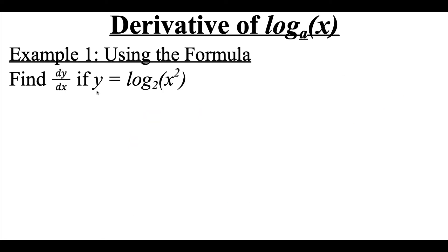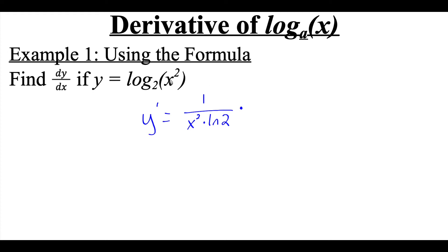So in this example, we've got the equation y equals log base 2 of x squared, and we're going to do the derivative. I notice that we have an inside function, so we are going to have to use the chain rule. This is going to be 1 over whatever's on the inside — so x squared — times the natural log of the base value, so 2, but then we have to multiply by the derivative of that inside function. The derivative of x squared is 2x.